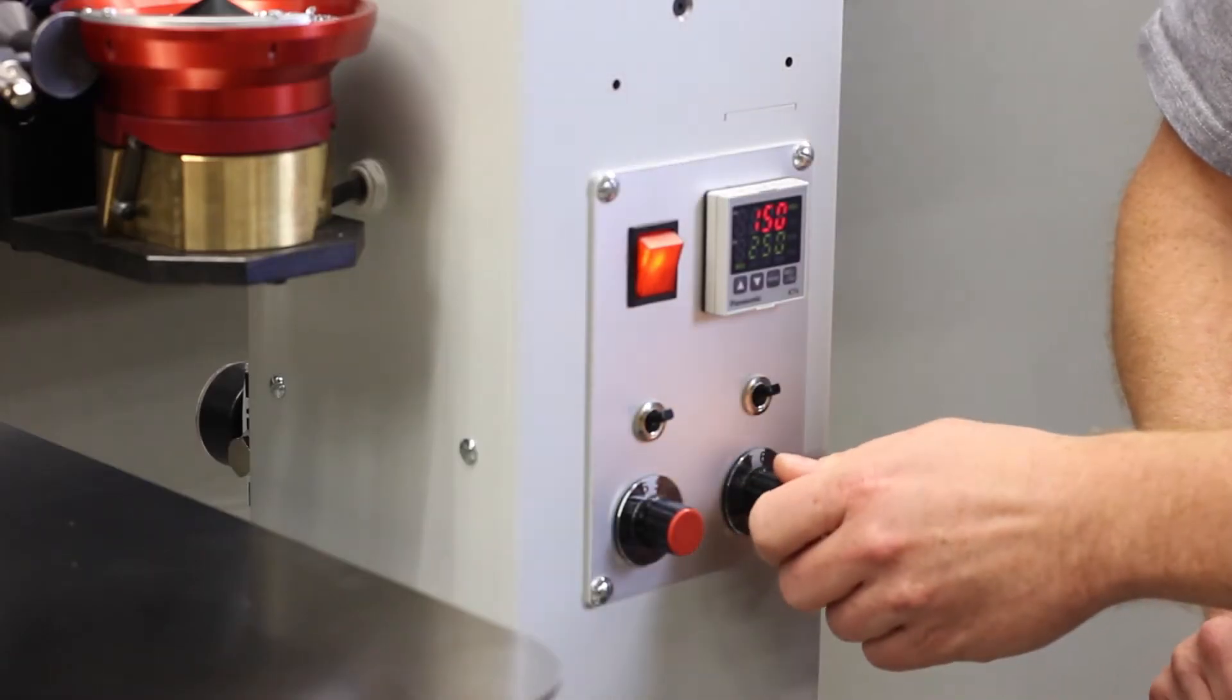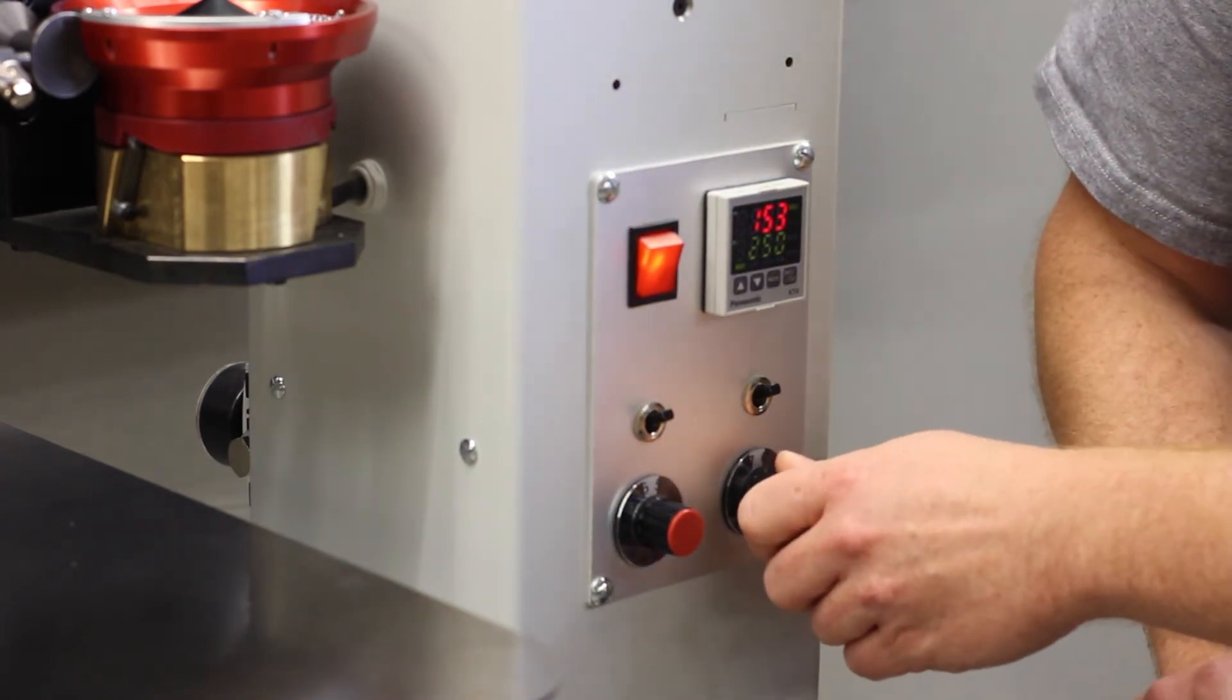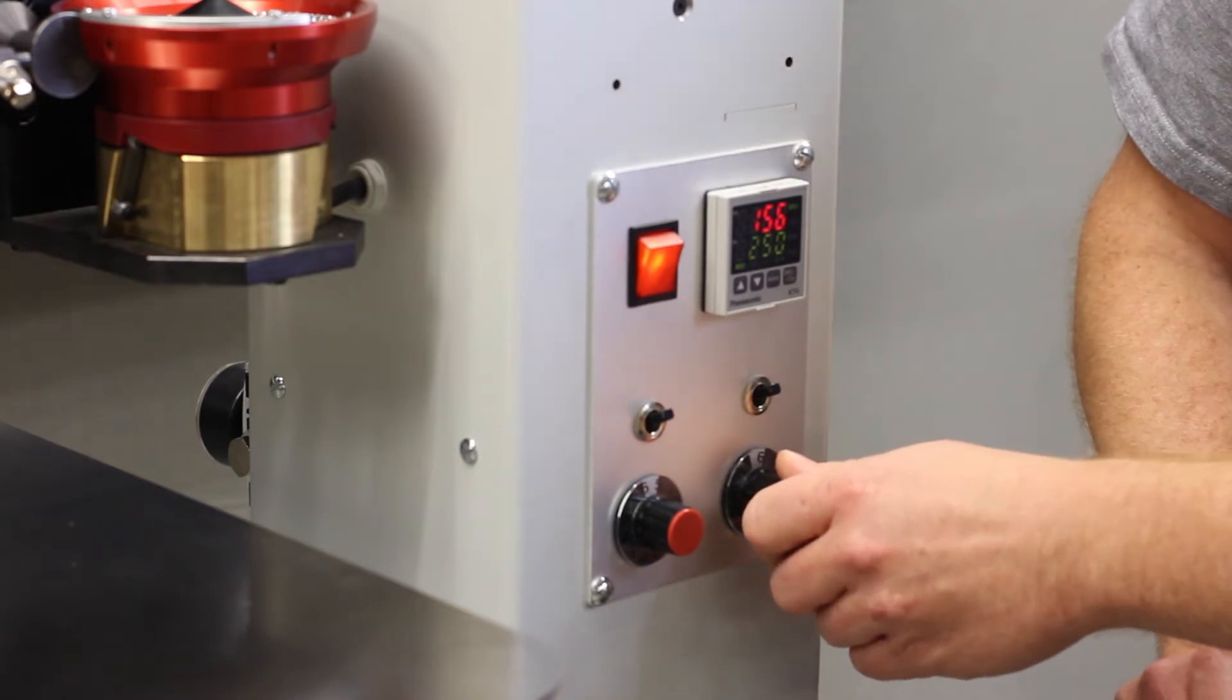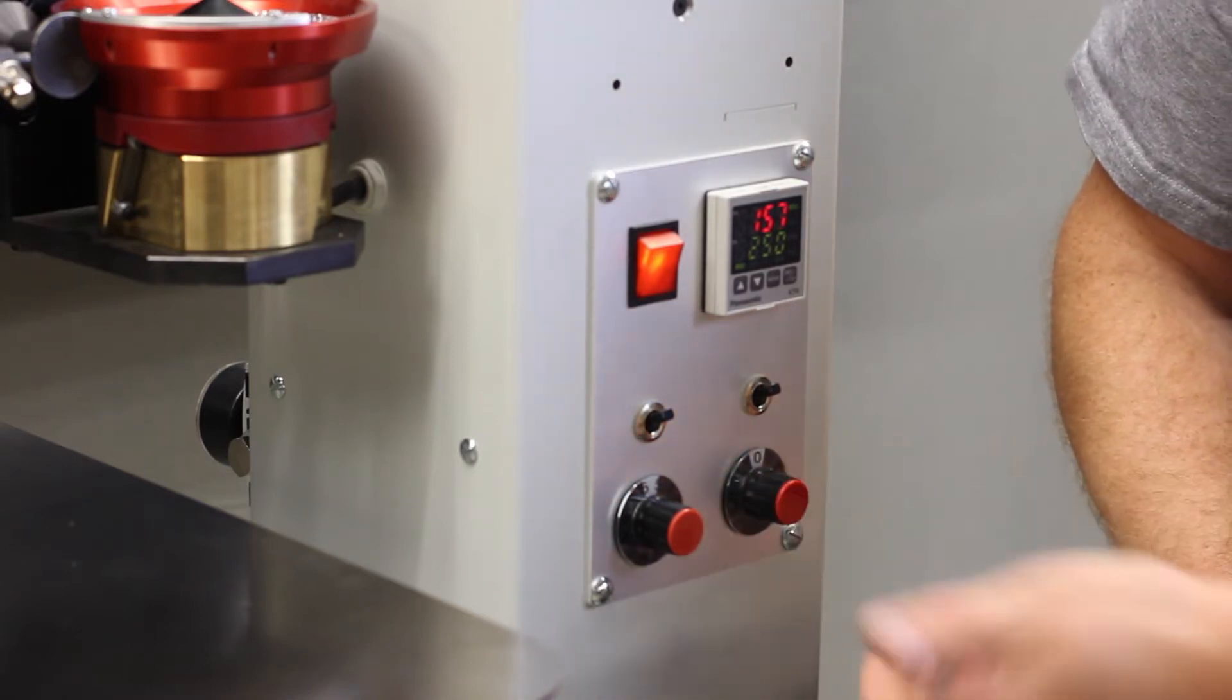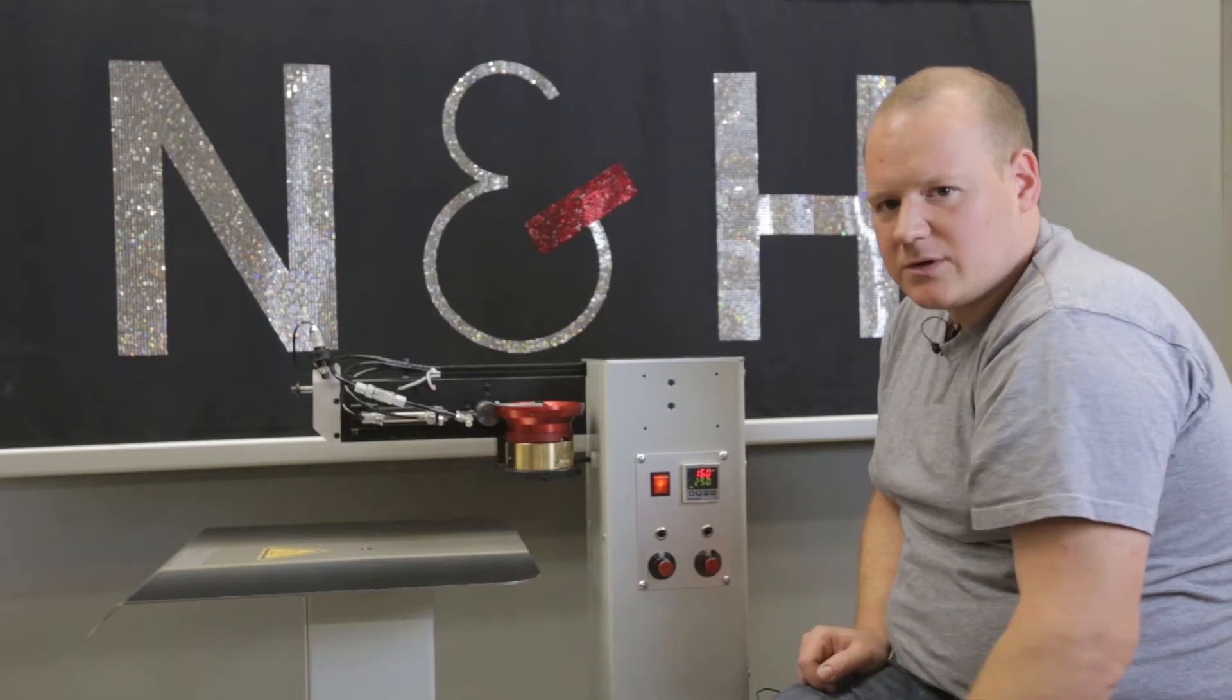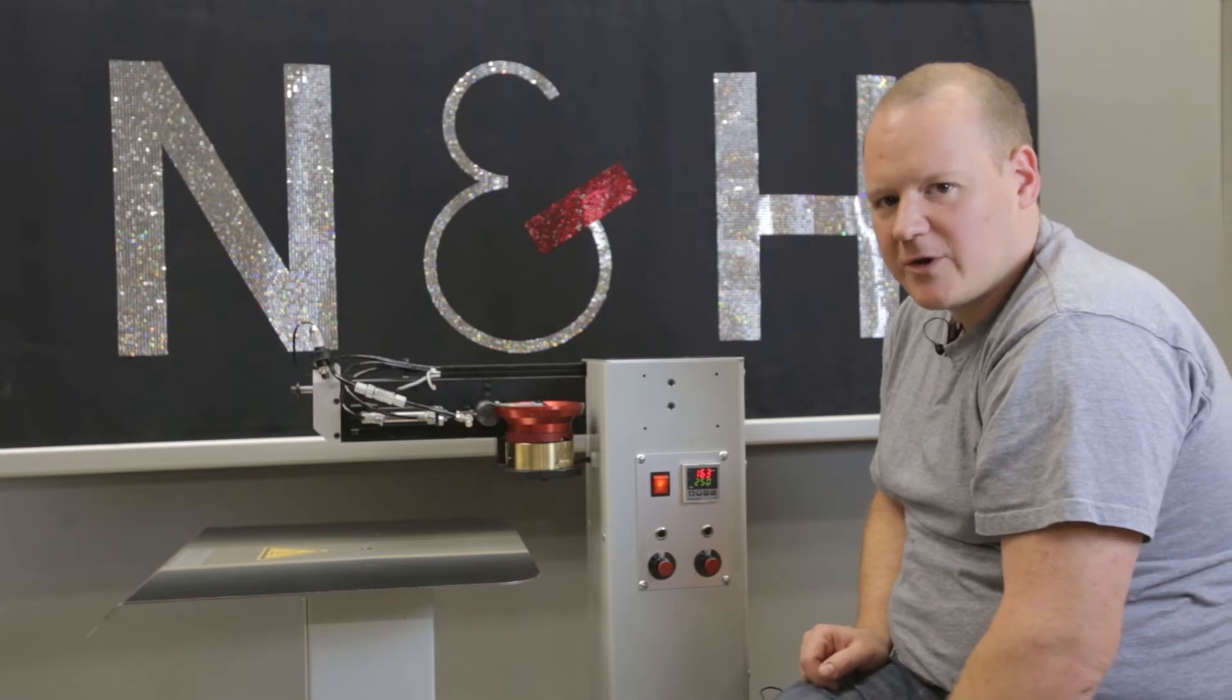Under this switch, you have another wheel and this wheel is for the press time. How long you press the stone on the fabric. Zero is very fast and you can turn up to about three or four seconds pressing the stone on the fabric.